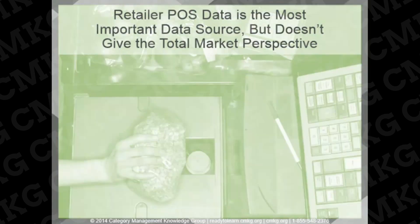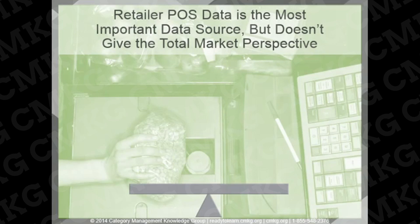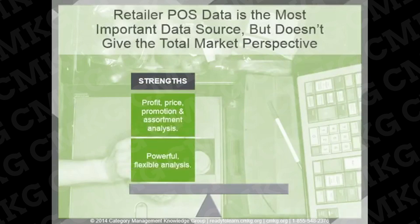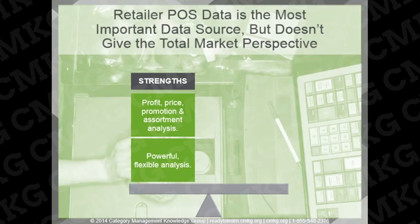Retailer scanned sales data can provide compelling insights, but there are strengths and challenges to consider. Retailer scanned sales data is the most important data source in category management. Because all categories are available all the way down to item level, the analysis capabilities are unlimited. Scanned sales data allows for powerful, flexible analysis including in-depth profit, promotion, pricing, and assortment analysis. Some retailers even have access to shopping basket and loyalty data, where we can get real insights into shopper behavior.